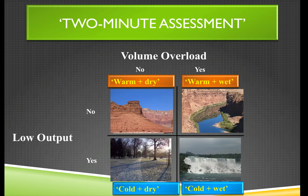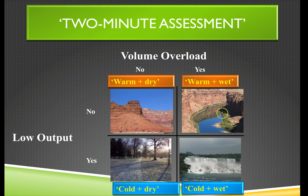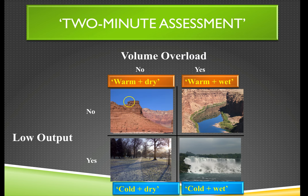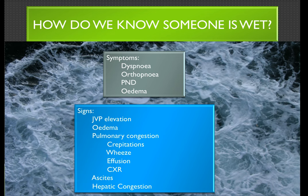Having staged the patient and described their NYHA class, we assess volume status and cardiac output — the 'two-minute assessment.' We want to know: is the patient volume-overloaded (wet) with adequate cardiac output (warm and wet), or volume-overloaded with low cardiac output (cold and wet)? Alternatively, have they been over-diuresed or had vomiting/diarrhoea, leaving them volume-depleted with adequate output (warm and dry), or volume-depleted with reduced output (cold and dry)? Management depends on which of these four boxes the patient fits.